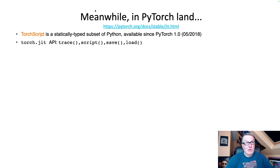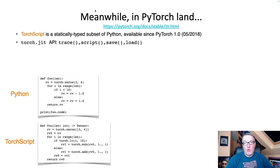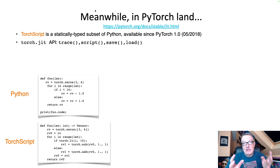The TorchScript API has been around forever. There's the Trace API and the Script API, which help you in slightly different ways convert Python code into TorchScript code, and then you can save and load your TorchScript models. In TorchScript, operators appear clearly — the less-than operator or plus/minus operators are actually replaced with function calls, because we want to make it obvious what the compute steps are. We see a little more typing introduced, and so on.